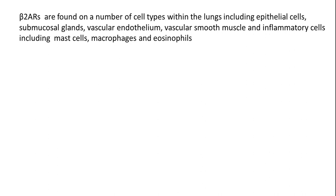Beta-2 adrenergic receptors are found on a number of cell types within the lungs, including epithelial cells, submucosal glands, vascular endothelium, vascular smooth muscle, and inflammatory cells including mast cells, macrophages, and eosinophils. So beta-2 adrenergic receptor distribution is wide throughout our system.